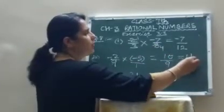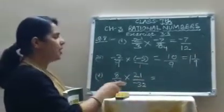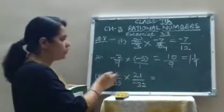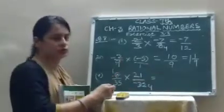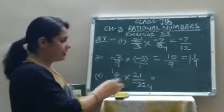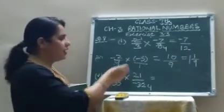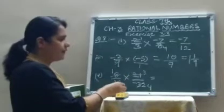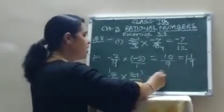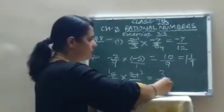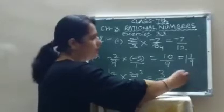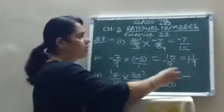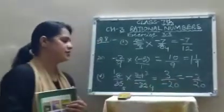10 upon 9 becomes 1 whole number 1 upon 9. Fifth part: 8 upon 21 multiplied by minus 30. You can cancel the denominator with the numerator. 21 and 35 share a factor of 7: 7 threes are 21, 7 fives are 35. After cancelling, 1 multiplied by 3 is 3, upon 5 multiplied by minus 4 is minus 20. In standard form, the minus sign shifts to the numerator, giving minus 3 upon 20.